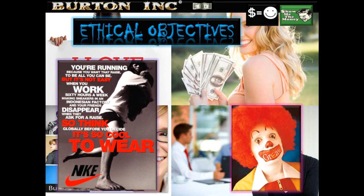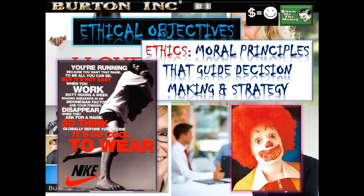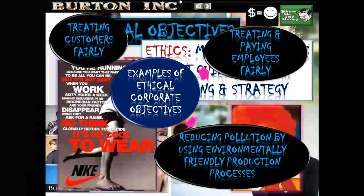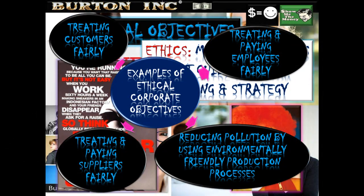Objectives don't have to be financial in nature — we can have ethical objectives. Ethics are the moral principles that guide decision making and strategy: what we believe to be right or wrong. Examples of ethical corporate objectives include: treating and paying employees fairly, reducing pollution by using environmentally friendly production processes, making sure suppliers are treated and paid fairly — this is where the fair trade movement comes in — and treating customers well, not offering a shoddy product.